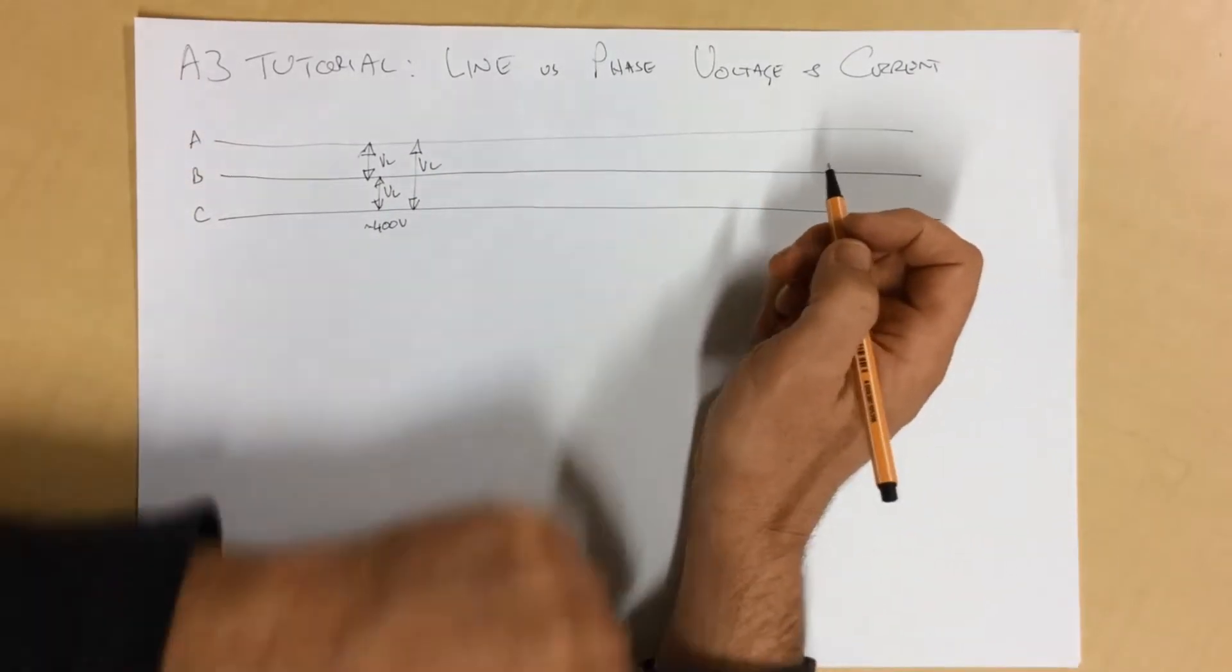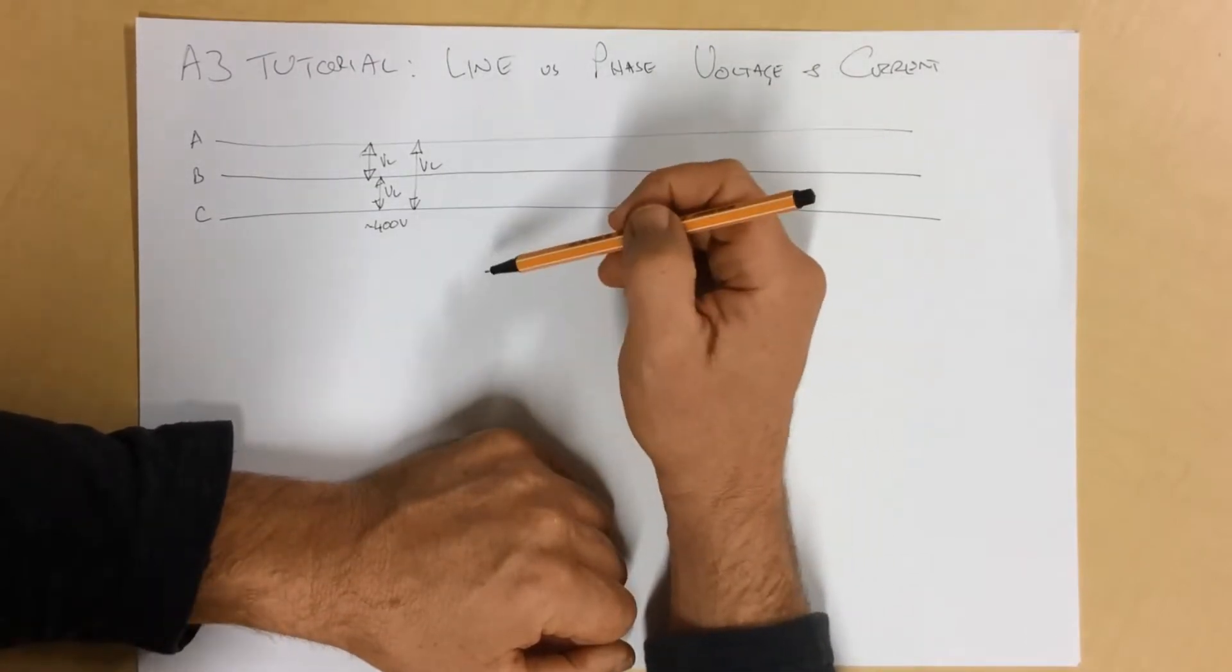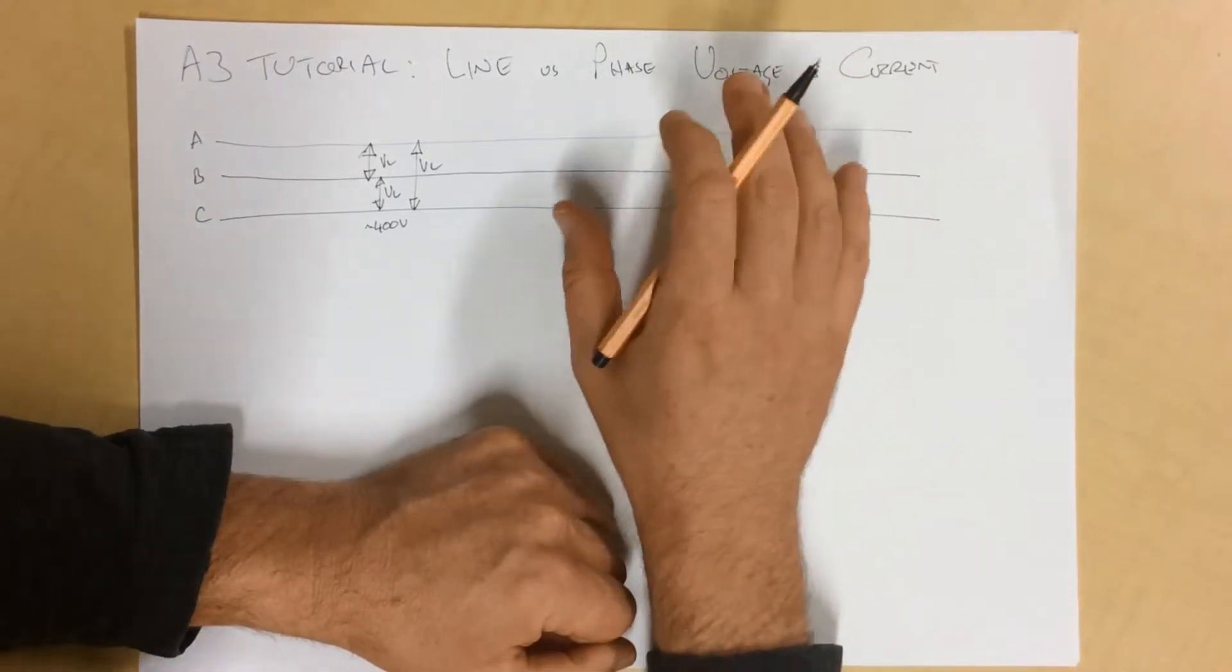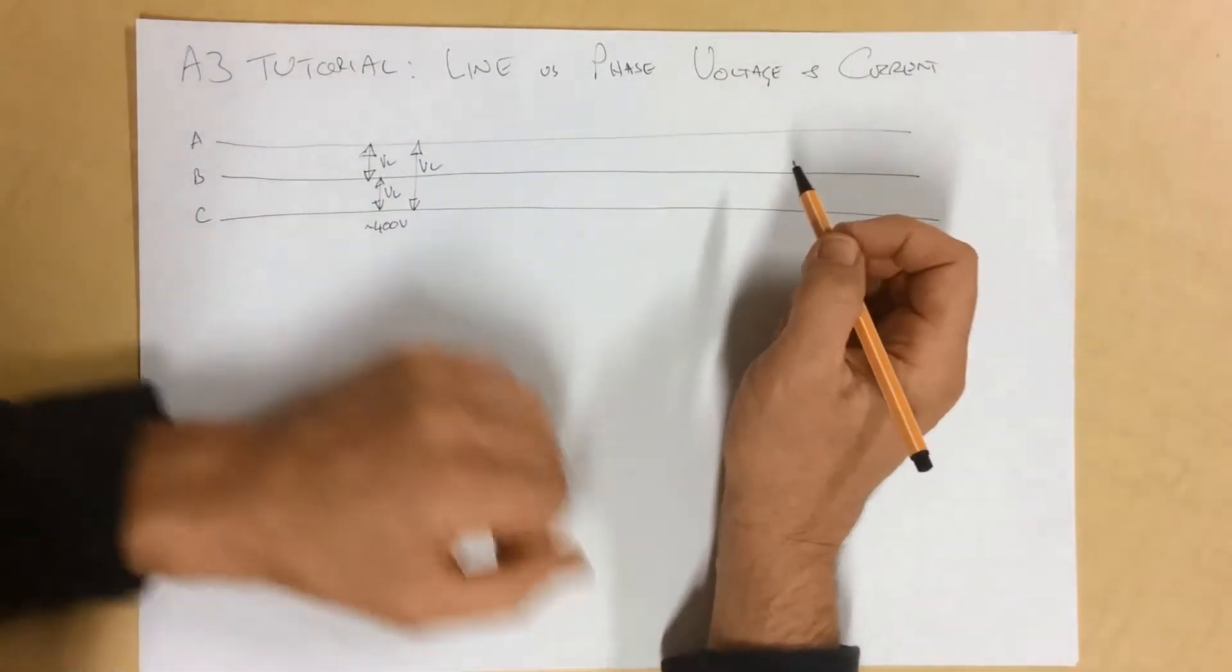So now, if that's the thing, where do we get this term phase voltage from then, and the line currents? And I think the best way of explaining this is to give two examples of a star system and a delta system.